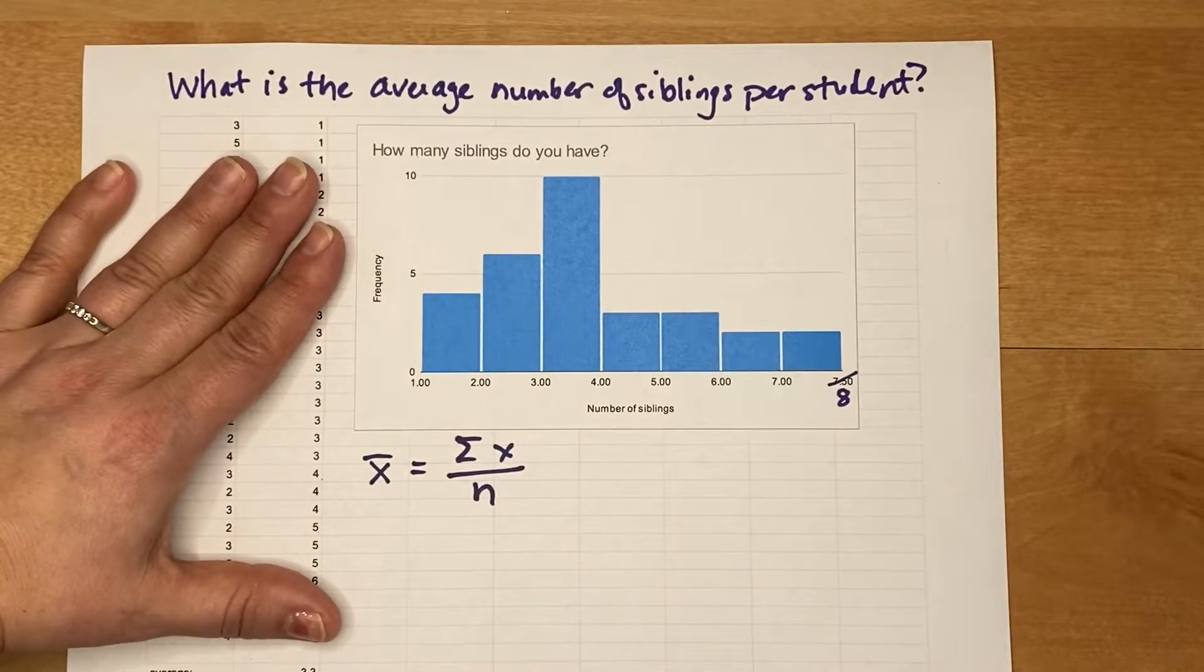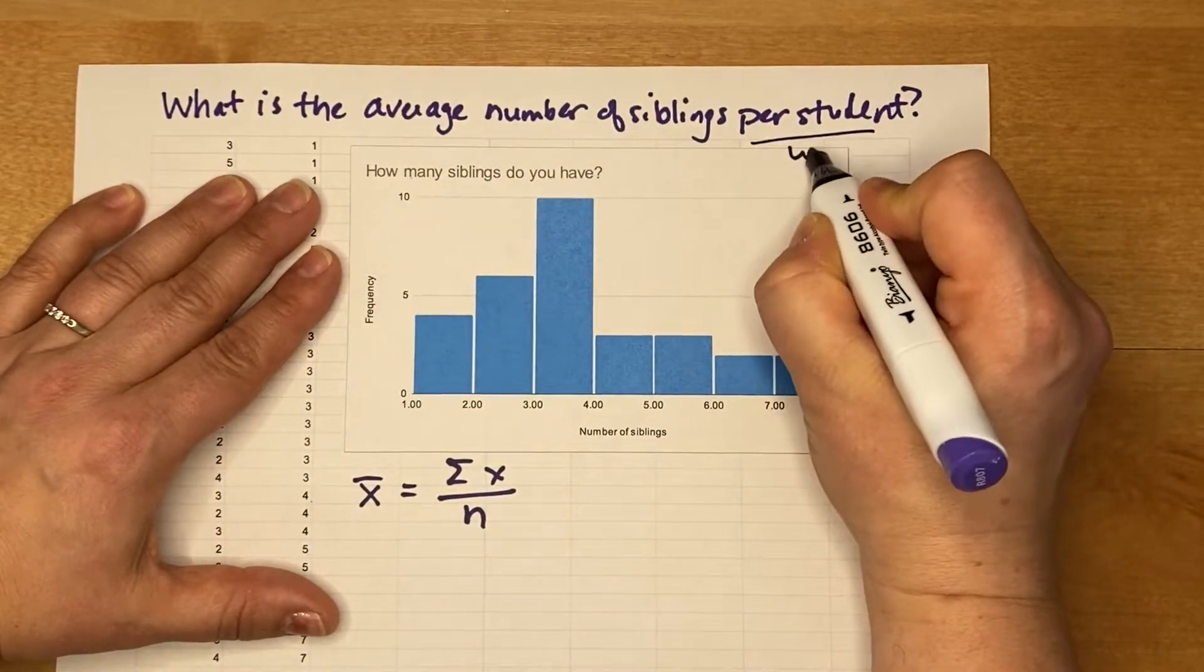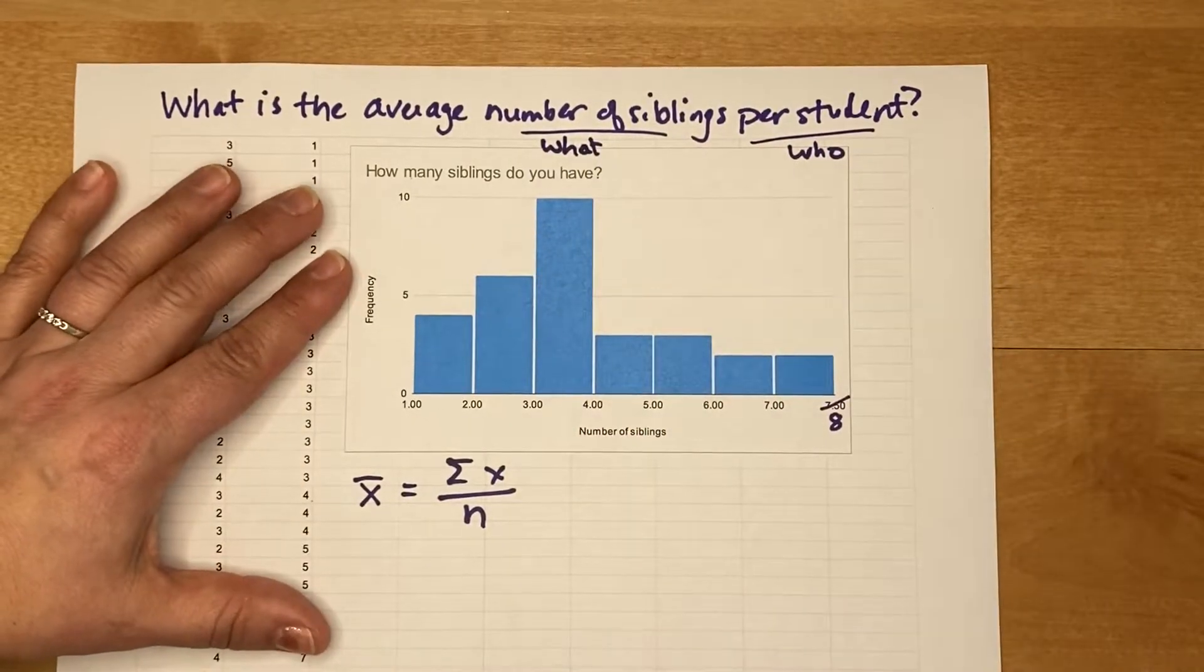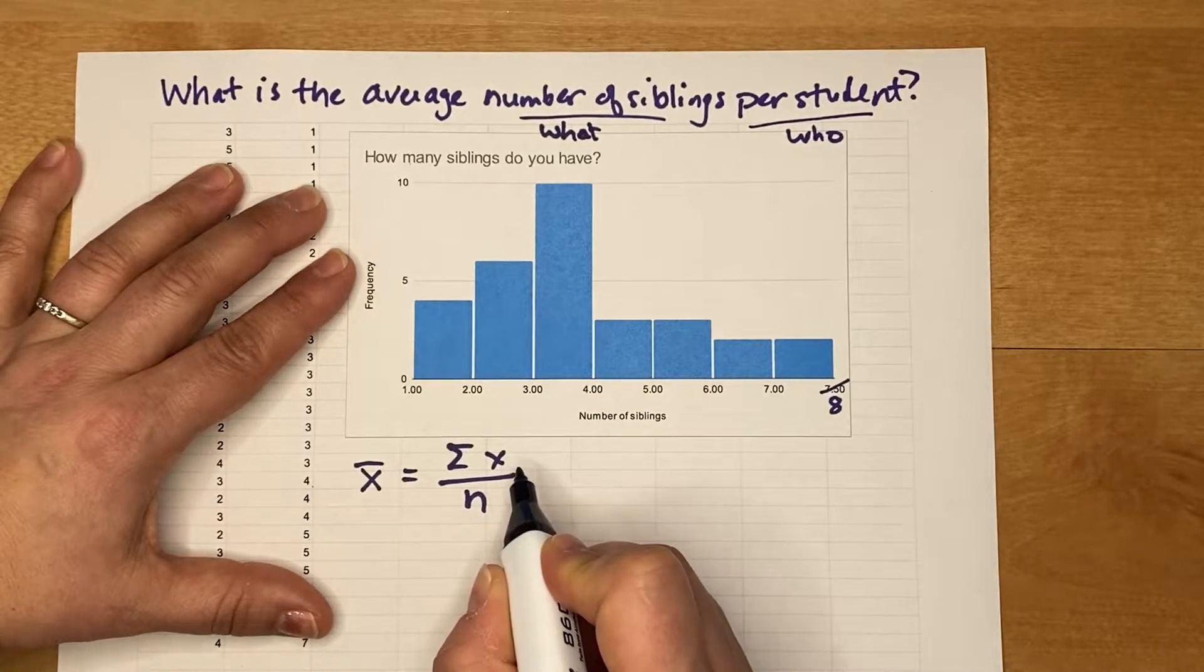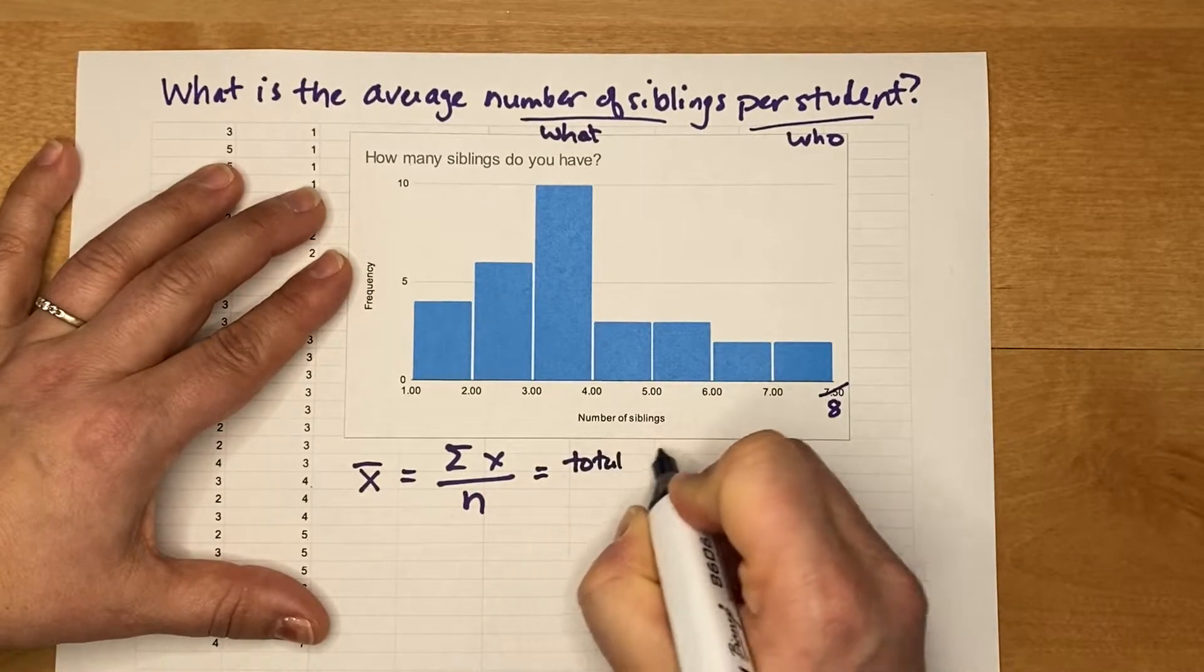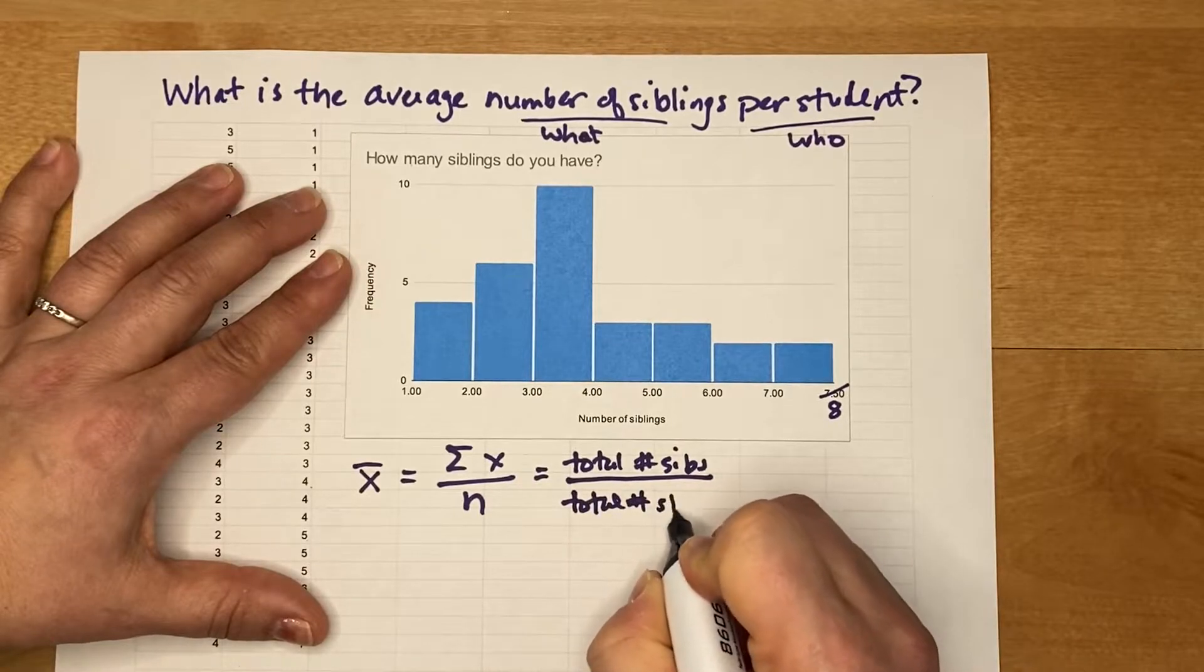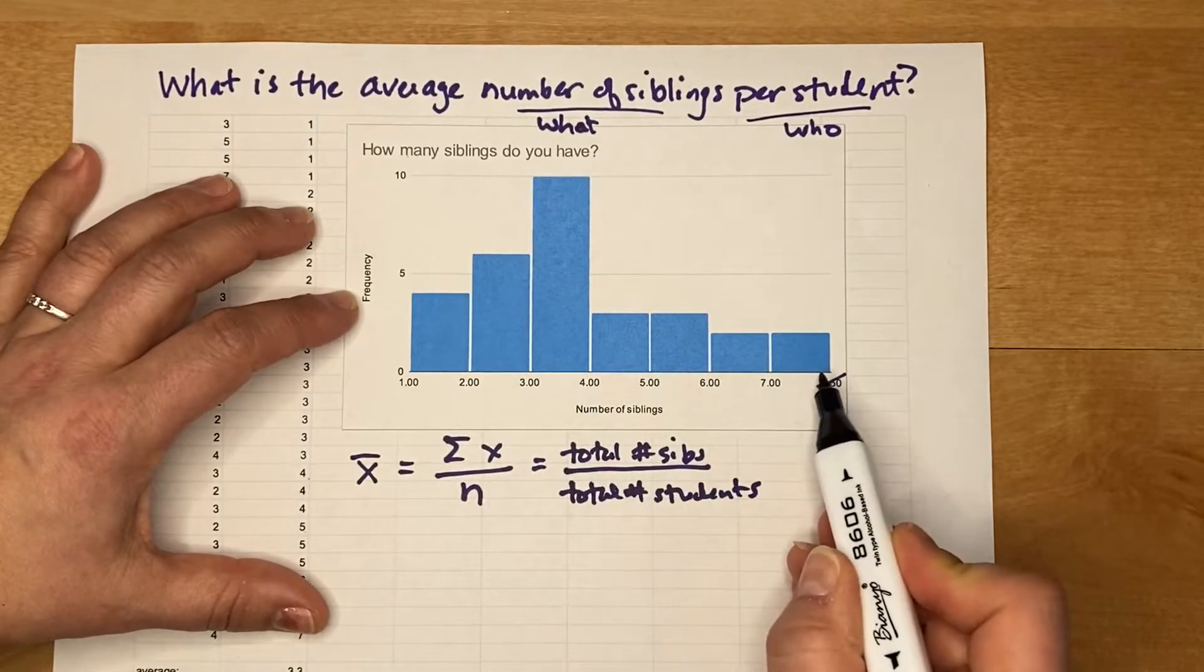Let's think about who and what we're studying. We are studying the students, and what we're studying is the number of siblings that each student has. So we're trying to figure out the average number of siblings per student. We need to find the total number of siblings and we're going to divide that by the total number of students.